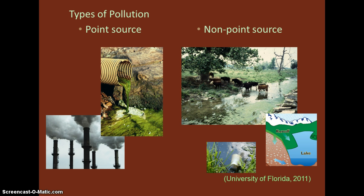Examples of non-point sources of pollution include: sediments from construction, forestry operations, and agricultural lands; bacteria and microorganisms from failing septic systems and pet wastes; nutrients from fertilizers and yard debris; pesticides from agricultural areas, golf courses, athletic fields, and residential yards; oil, grease, antifreeze, and metals washed from roads, parking lots, and driveways; toxic chemicals and cleaners that were not disposed of properly; and litter thrown onto streets, sidewalks, and beaches, or directly into the water by individuals.